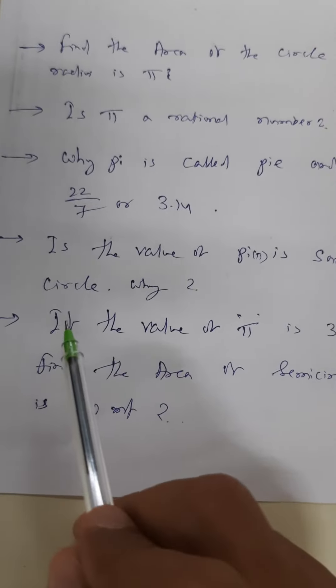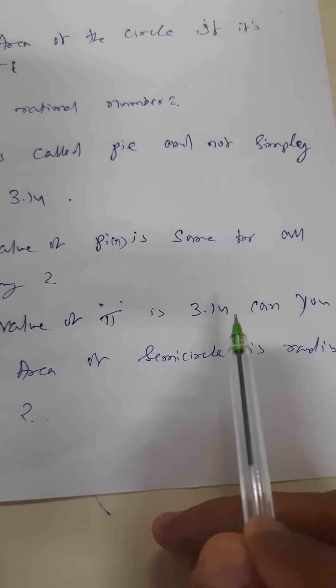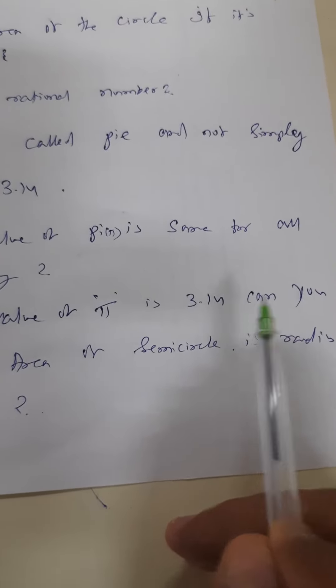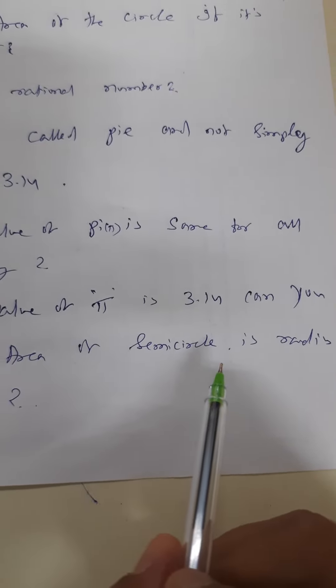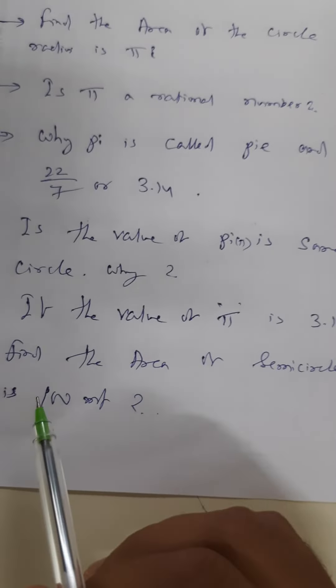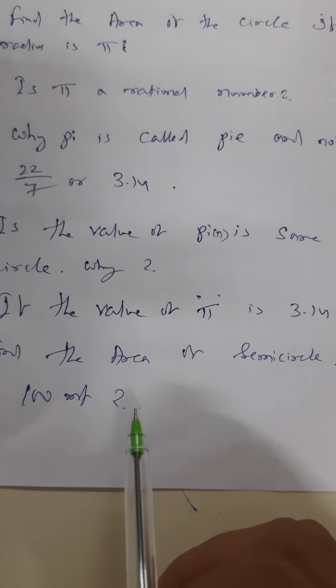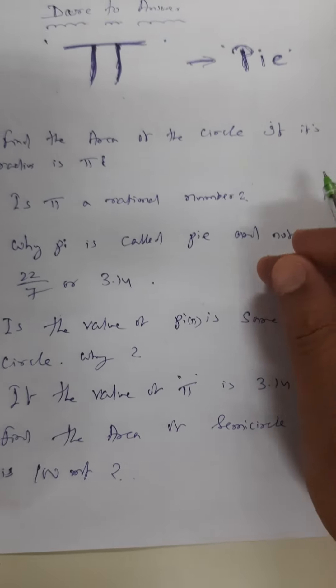Last but not the least: if the value of pi is 3.14, can you find the area of the semicircle if the radius is 100 meter? So my dear friends, this is the challenge from my side.